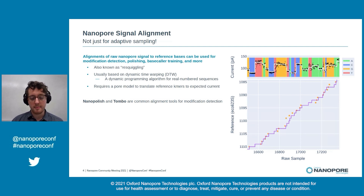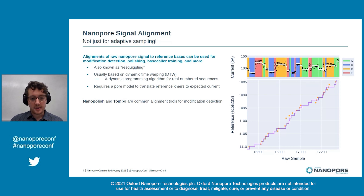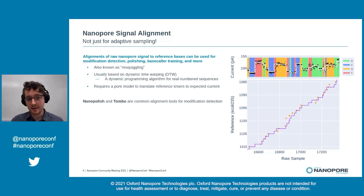These methods are usually based on dynamic time warping, where the raw signal is aligned to a DNA reference using a pore model to find the expected current from that reference. This figure illustrates an alignment of nanopore signal on the x-axis to a reference genome on the y-axis, with the signal annotated by which reference base it matches. Common tools to perform this type of analysis are Nanopolish and Tombo, and many modification detection tools use input from one or both of these tools for downstream analysis.